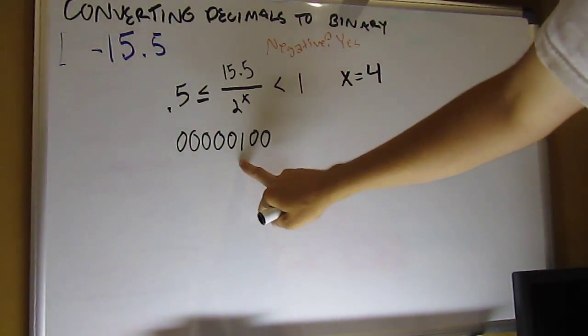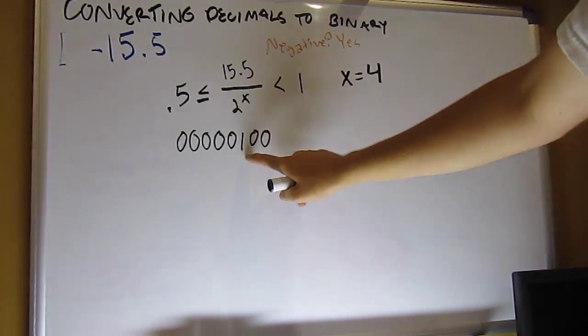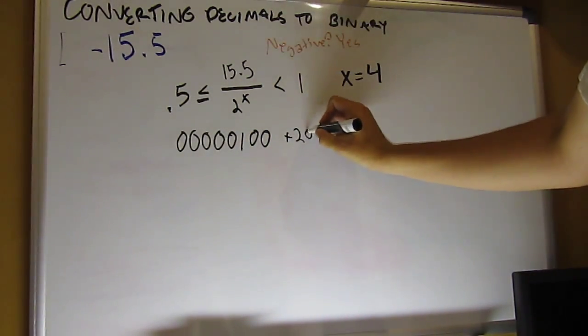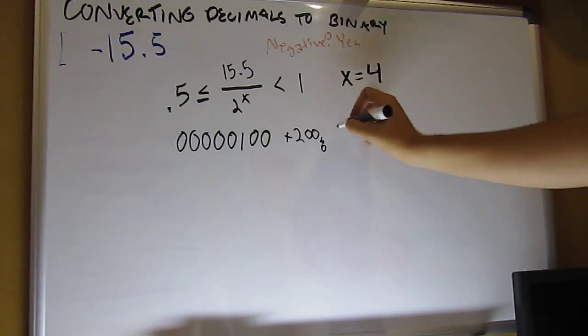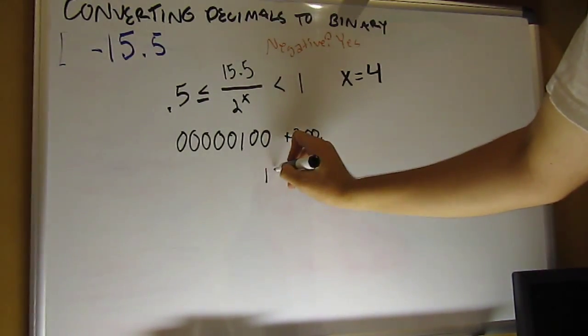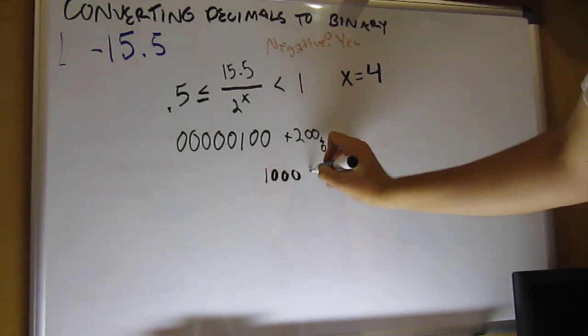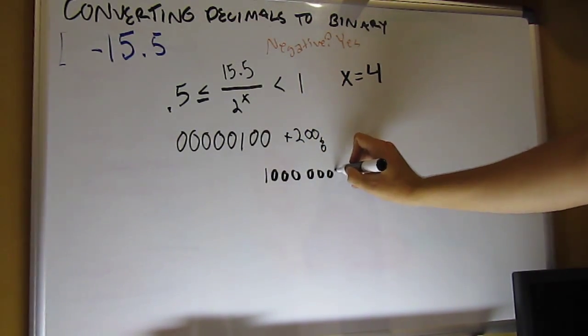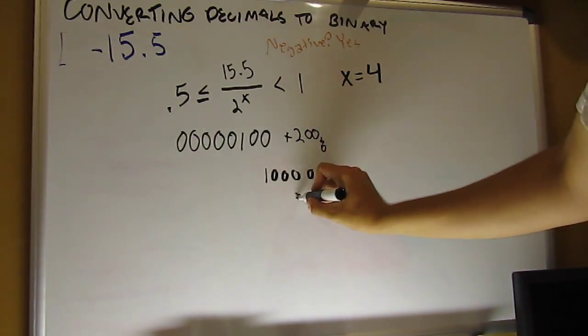So we're returning on the 4 here, so that equals 4. Now we have to add the bias, which is 200 sub 8, which is equal to 10000000, which is equal to 128.